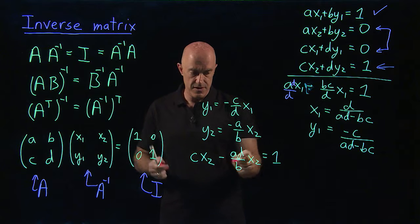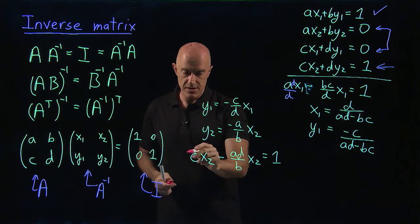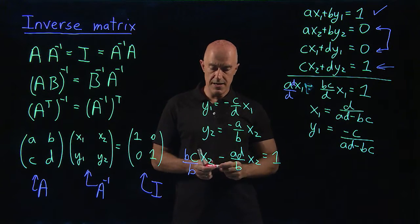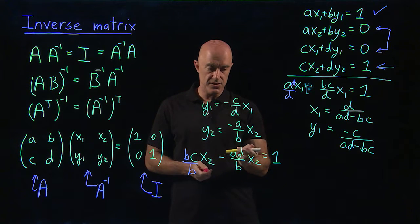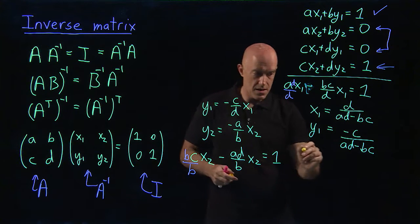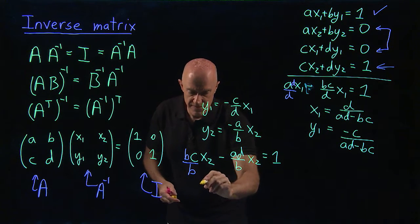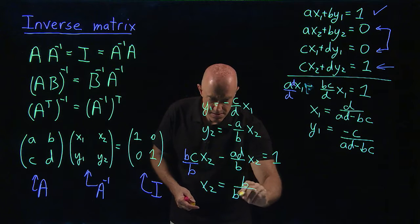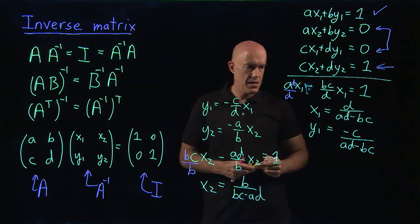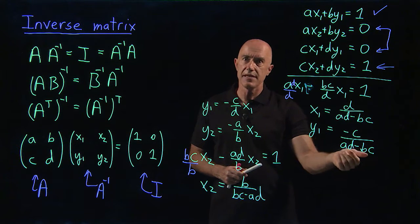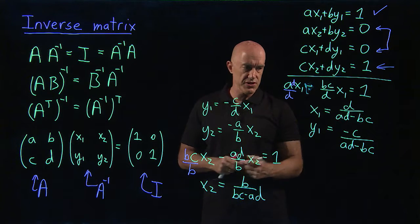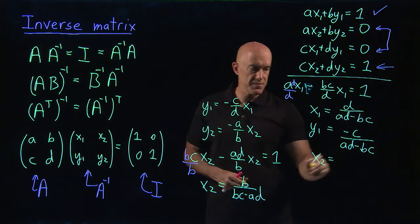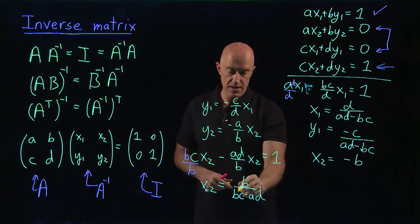Again, we do the same thing. So we have a b here in the denominator. So we have a bc and then a b. And then we can solve this for x2. So we get x2. Let me do it down here first. So we get x2 equals b over bc minus ad. So bc minus ad is just the negative of ad minus bc. So we can change the sign here. So we can write x2 equals minus b over ad minus bc.